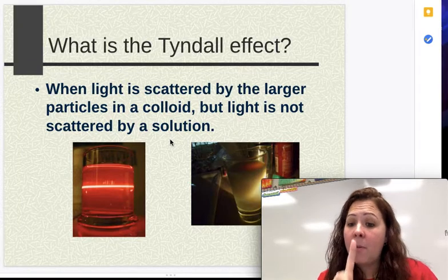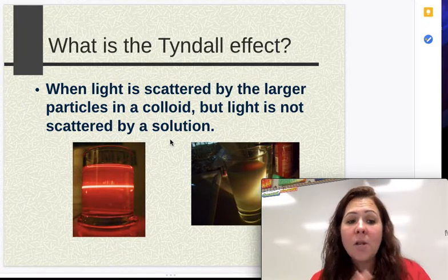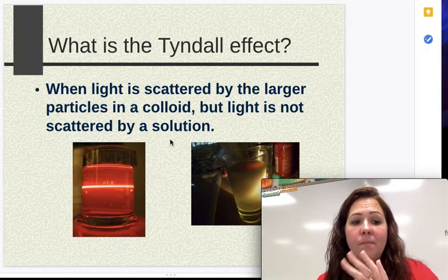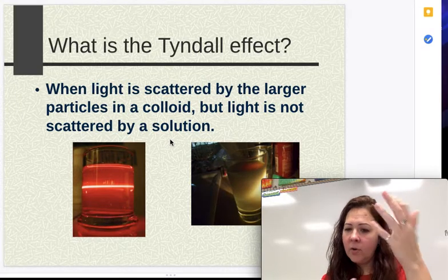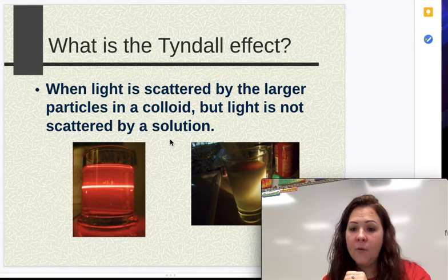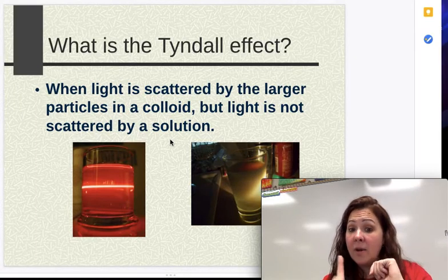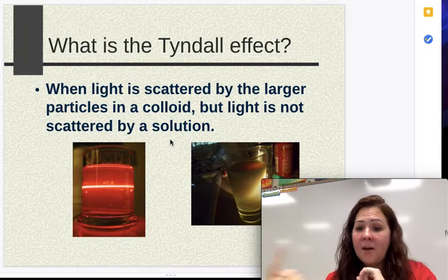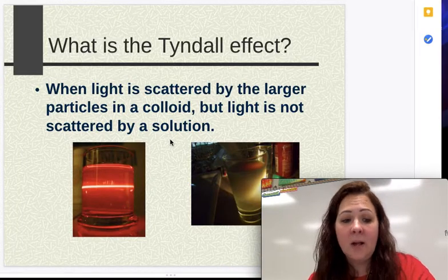A suspension is where the particles are big enough that they settle to the bottom when they sit. So when figuring out if you have a colloid or a suspension, let it sit overnight. If nothing settles to the bottom, it's either a colloid or a solution. Then shine a light through it — if the light passes all the way through, it's a solution. If it bounces away, it's a colloid.